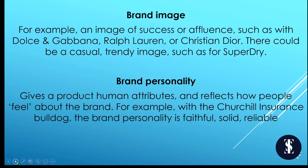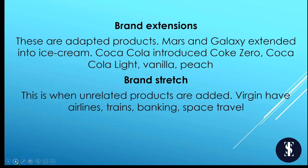Brand image — think about the image of success or affluence: Dolce and Gabbana, Ralph Lauren or Christian Dior. Or a casual, trendy image such as Superdry. Brand personality gives a product human attributes and reflects how people feel about the brand — think about the Churchill Insurance bulldog: faithful, solid and reliable. Brand extensions are adapted products — think about Mars and Galaxy with their ice cream, or Coca-Cola with Coke Zero, Coca-Cola Light, vanilla Coke, peach Coke or cherry Coke.